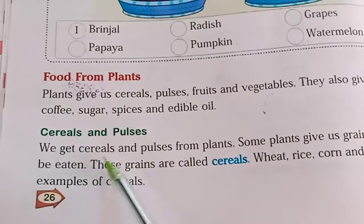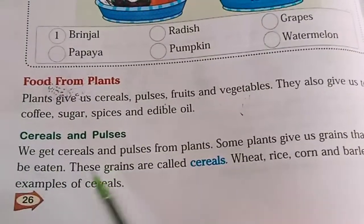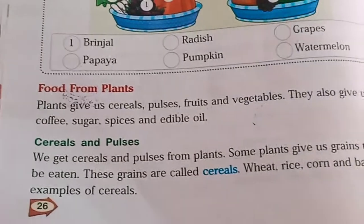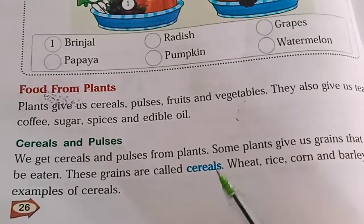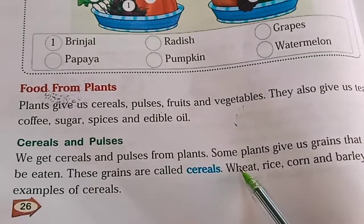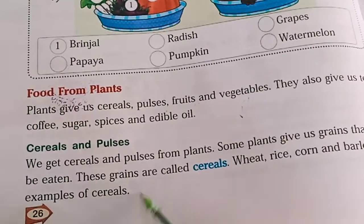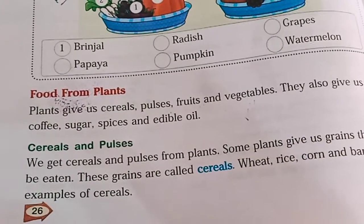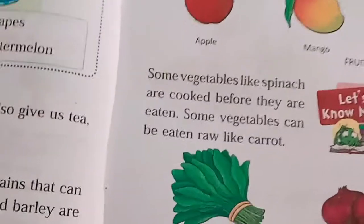Cereals and pulses — we get cereals and pulses from plants. Some plants give us grains that can be eaten; these grains are called cereals. For example, as we said before: wheat, rice, corn, and barley — these all come under cereals. If someone asks you what cereals are, you can give examples like wheat and rice.